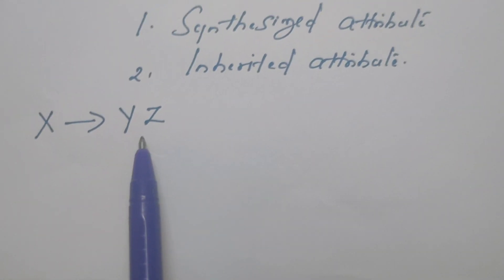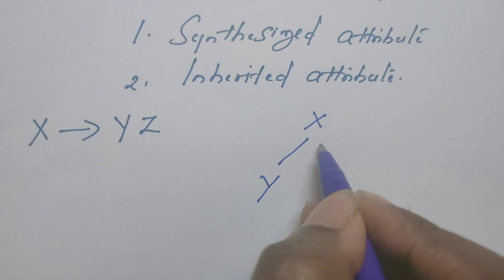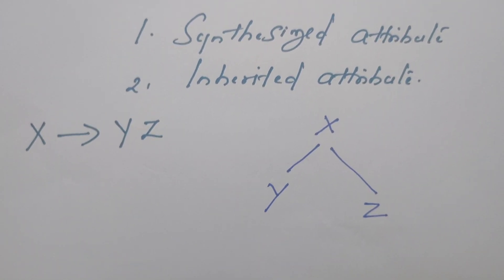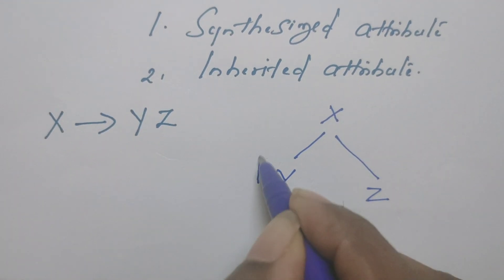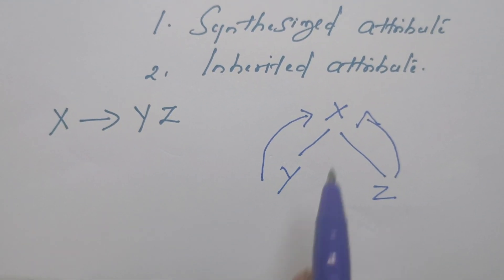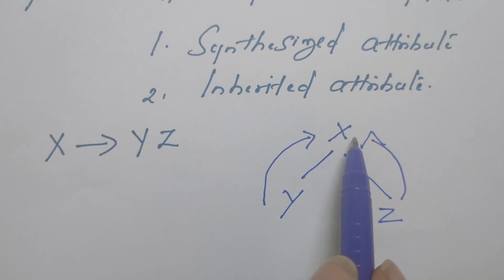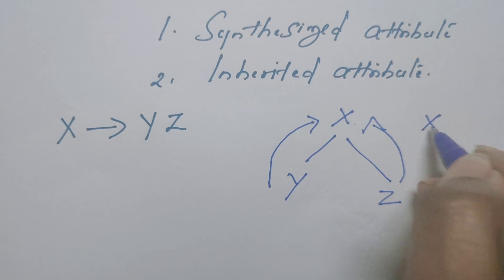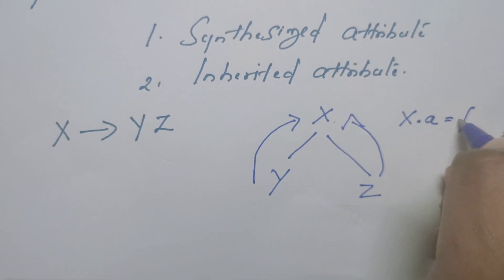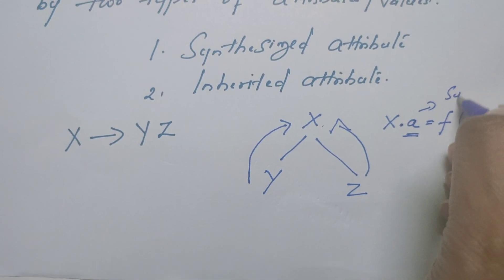Suppose we have a production rule: X derives Y Z. Let me draw this as a parse tree. X is at the root; the head of the production rule is at the root, and the body appears as child nodes. If the value of X is obtained with the help of Y and Z — look at the dependency graph — if the value of X is computed from Y and Z, then the attribute at X is synthesized. For example, if value stored in attribute A is calculated by applying some function over Y and Z, then A is a synthesized attribute.